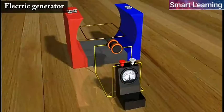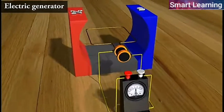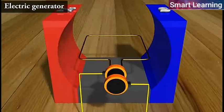An electric generator, as shown here, consists of a rotating rectangular coil ABCD placed between the two poles of a permanent magnet.